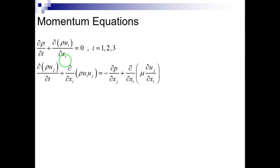Here, attention is given to the solution of incompressible flows. In incompressible flows, the continuity equation is written differently, since density changes are due mainly to temperature, not pressure. Therefore, in incompressible flows there are four equations and four unknowns. The important issue is the lack of an explicit equation for pressure.